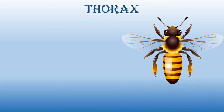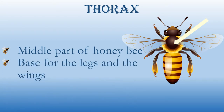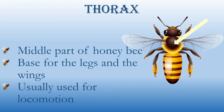The thorax is the second part of the honeybee. The arrow indicates the thorax region. It bears the legs and wings, which are usually used for locomotion.